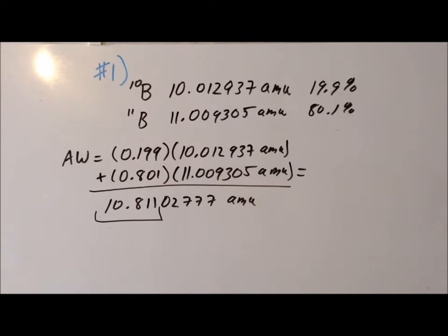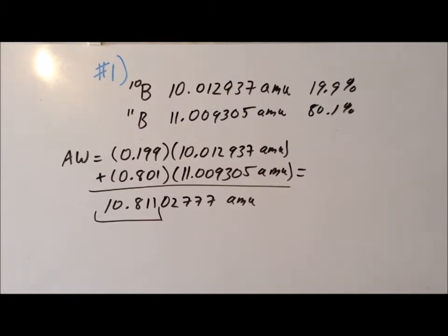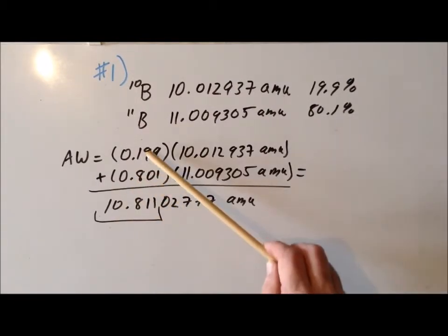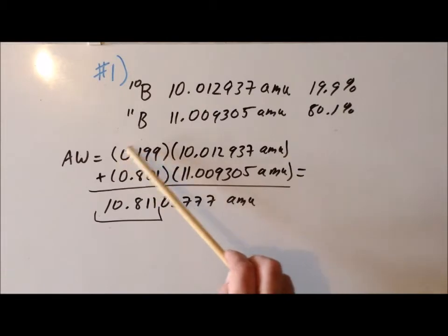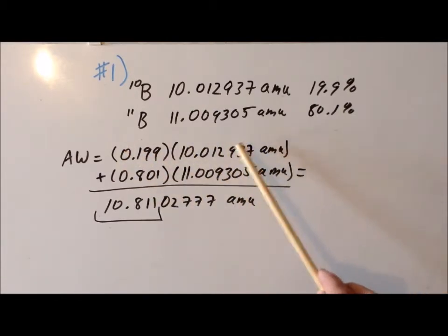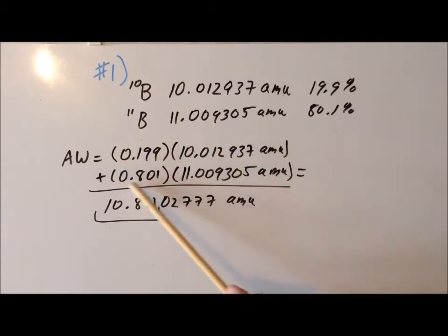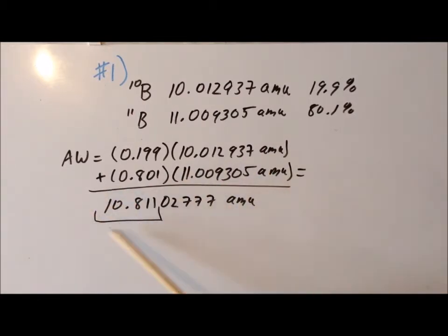But this is the general approach that we use to calculate the atomic weight of any particular element. If the element has more than two isotopes, we would just continue the process: the probability of the first isotope times its mass, the probability of the second isotope times its mass, then the probability of the third isotope times its mass, until we've included all the relevant isotopes. And then we get a final result.